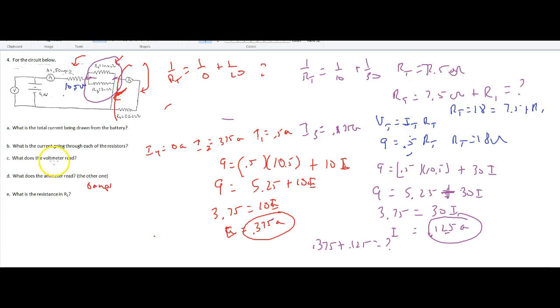So what does the voltmeter read? The voltmeter reads, well, the voltmeter is across the battery, right? An electron, positive charge, comes out of this side, goes through the voltmeter, comes back, has to drop 9 volts to get back to there. So this one's going to read 9 volts.